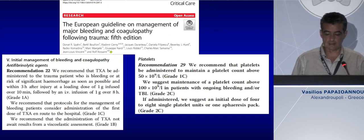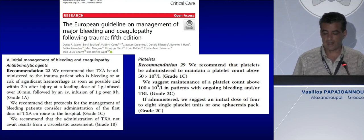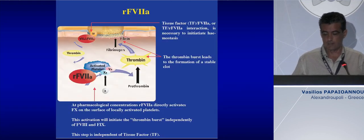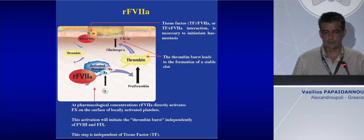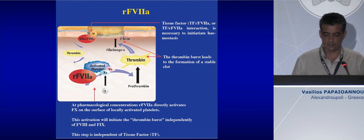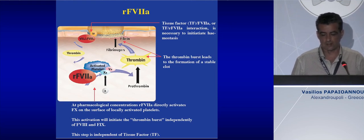If fibrinogen is insufficient, we will administer either fibrinogen concentrate or cryoprecipitate at a dose of 3 to 4 grams. Regarding TXA, tranexamic acid guidelines remain the same as in the 2016 publications. Regarding platelets, we need a level of at least 50,000 to 100,000 per milliliter. In cases of severe traumatic brain injury or severe hemorrhage, we need more than 100,000 platelets per milliliter. Recombinant factor VIIa remains off-label and is not indicated unless all other hemostatic measures have failed.